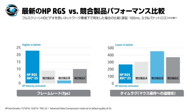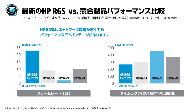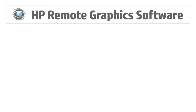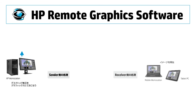HP VELOCITYのようなネットワークを監視し是正するような機能を備えた製品はありません。次に競合製品とのパフォーマンス比較を見てみましょう。フルスクリーン表示にしたフルHD動画を環境の悪いネットワークを利用して遠隔から再生したテストでは、RGSは他の競合製品よりもはるかに優れています。これはネットワーク環境を監視・是正するソフトウェアHP VELOCITYによる効果です。